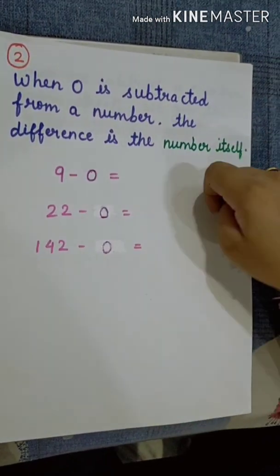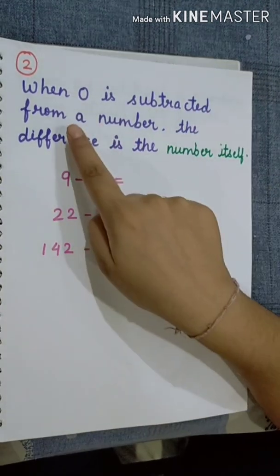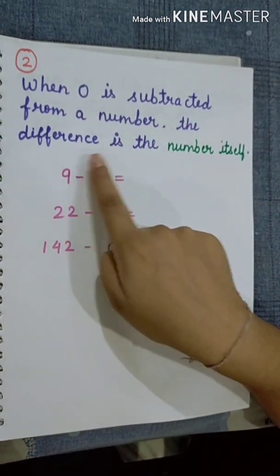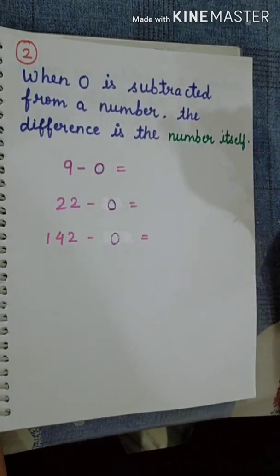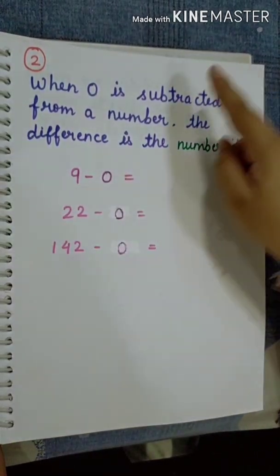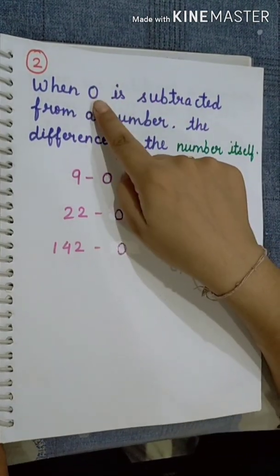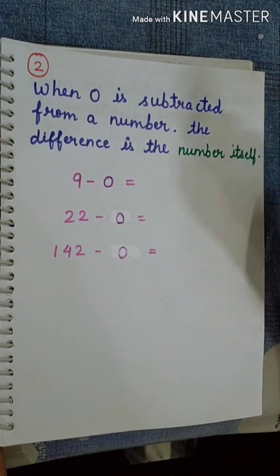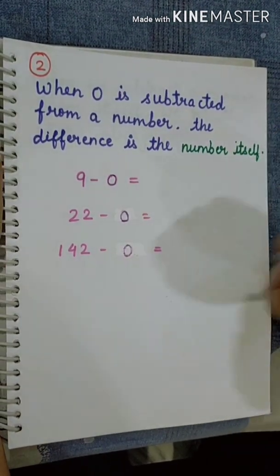Property number 2: when 0 is subtracted from a number, the difference is the number itself. That means if we subtract 0 from any number, we get the number itself.